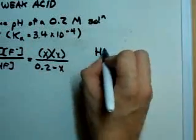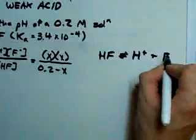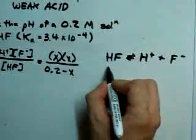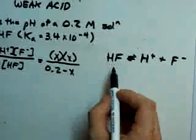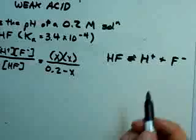And if you'd like a little more proof of that, HF dissociates in an equilibrium to give you H plus and F minus. If you start with 0.2 of this, you'll be left with 0.2 minus X if you produce X of this and X of this.